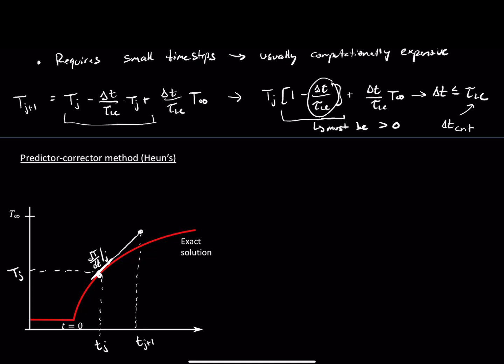At this point, what we're going to do is estimate the derivative again at our new point — at Tj+1, we're going to estimate the derivative again. Let's say it looks something like this. This is now dt/dt at j+1.